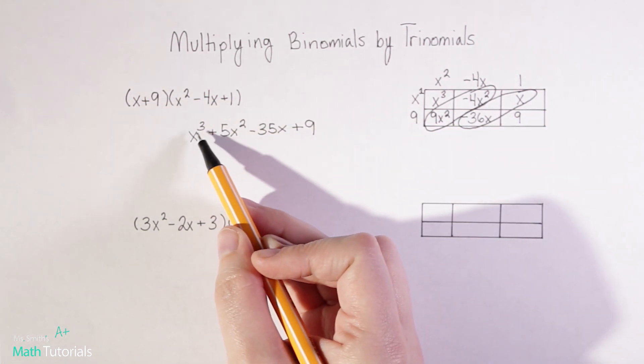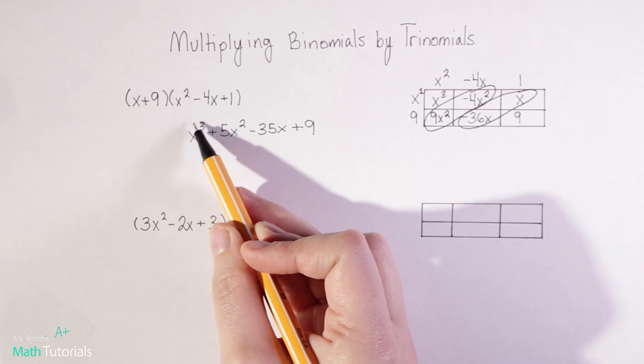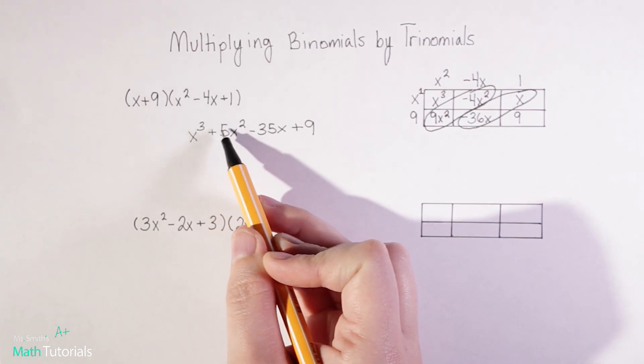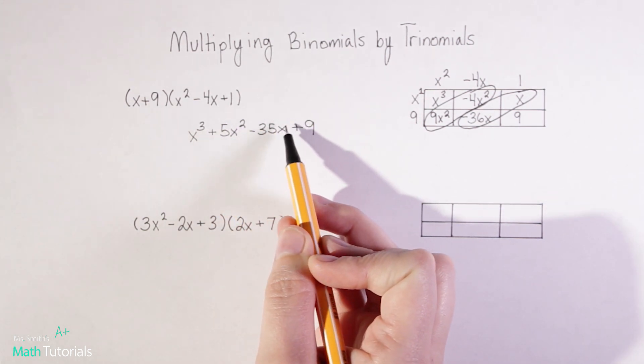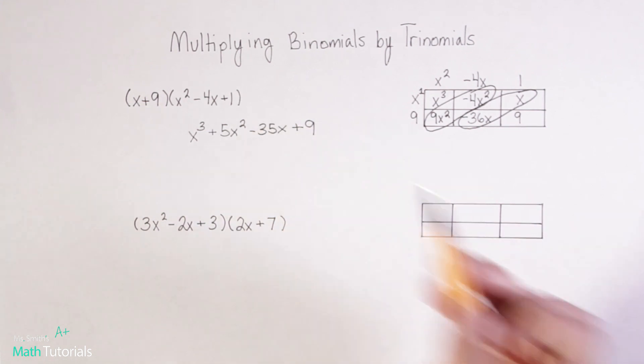Notice that I've written my answer in standard form, which means I've got my highest exponent first, descending all the way down to my lowest exponent, and my constant last. So that would be my final answer.